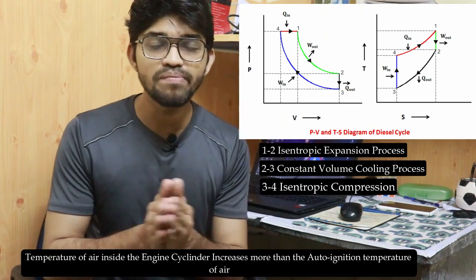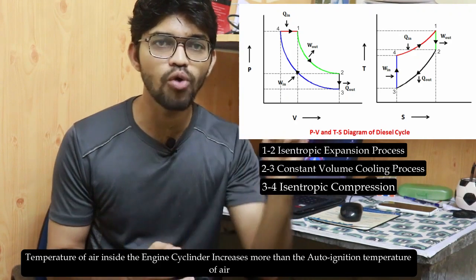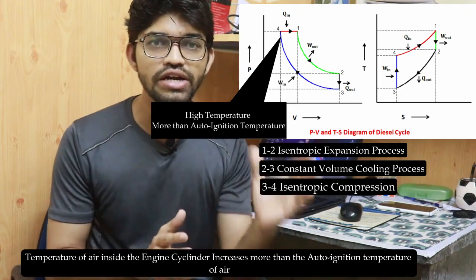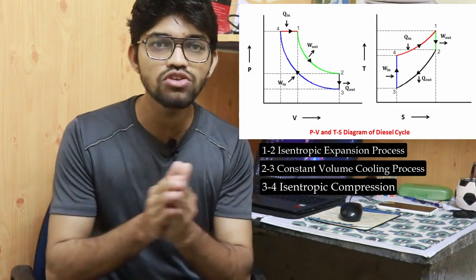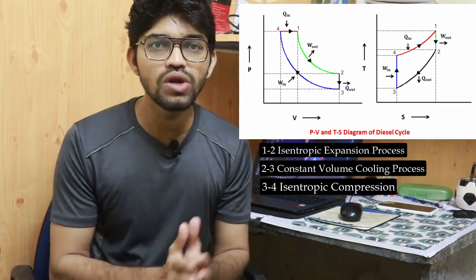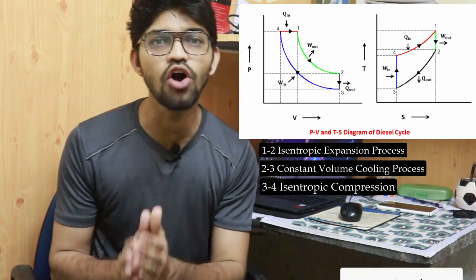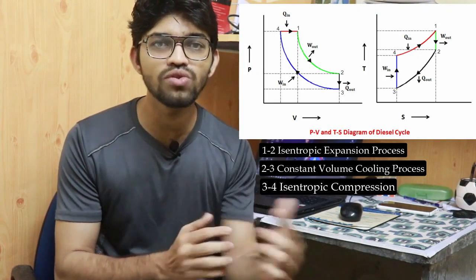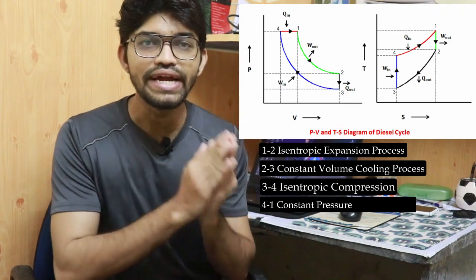The auto-ignition temperature is the temperature at which ignition takes place. When the temperature of the air inside the engine cylinder exceeds the auto-ignition temperature and fuel is injected into the combustion chamber, ignition occurs automatically. Therefore, in the diesel engine, we do not need a spark plug as used in petrol engines — only a fuel injector is needed. Process four to one is the constant pressure heat addition process.